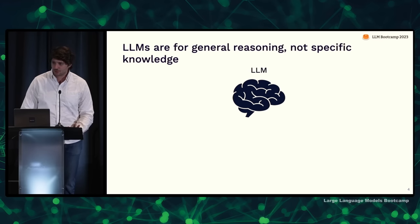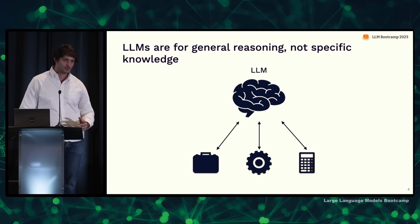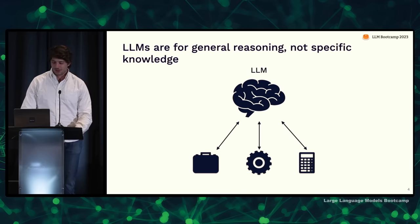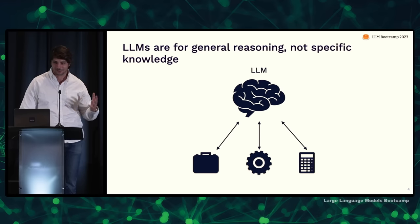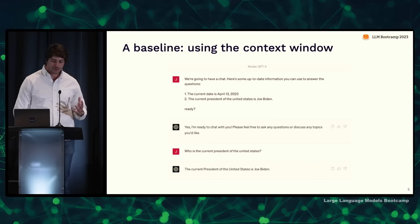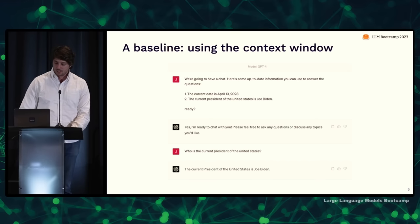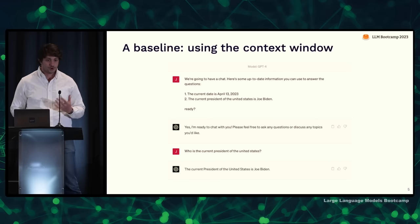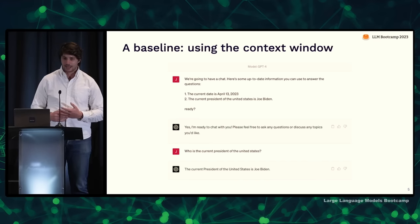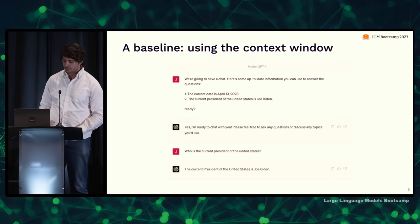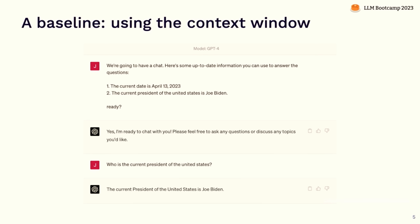Think of a large language model like you when you were in high school: probably really smart, but you don't know anything. In order to actually solve problems, you need some training, a calculator, and other tools. The simplest way to give the model information is to just put more data in the context window. If I want the model to know who the president of the United States is, I can tell it the current date and who the president is. The model will pretty reliably answer that question, with the exception of things like hallucination.